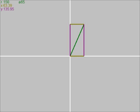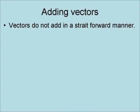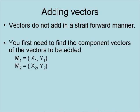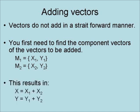These component vectors run along the x and y-axis with magnitudes of 63.39 and 135.95 respectively. Now vectors do not add in a straightforward manner, because you have to consider both their direction and magnitude. You first need to find the component vectors of the vectors to be added. In this case, we have m1 with component vectors x1 and y1, and m2 with component vectors x2 and y2. This results in a simple addition of magnitudes such that x equals x1 plus x2 and y equals y1 plus y2.